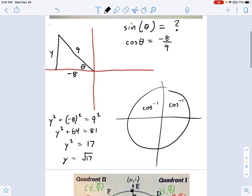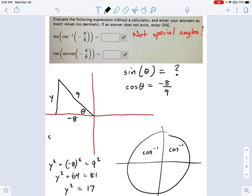And that means the sine of this angle is the square root of 17, the y value over the hypotenuse, nine. There we go. There's our answer.